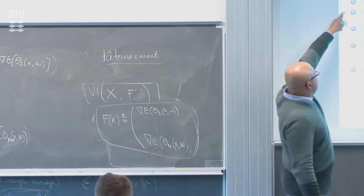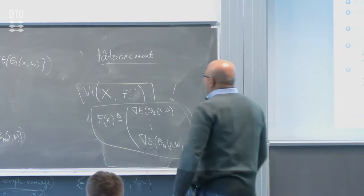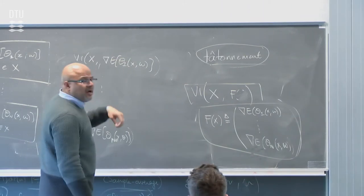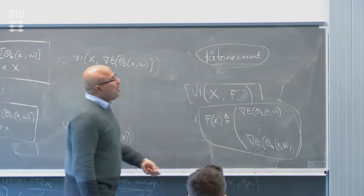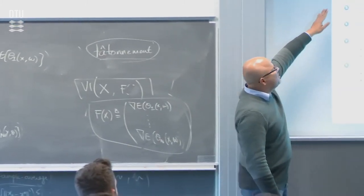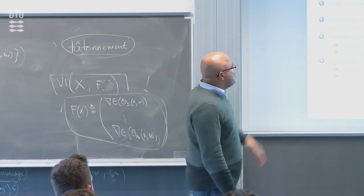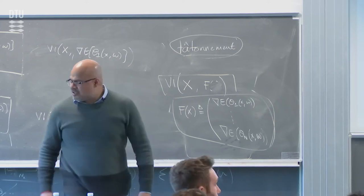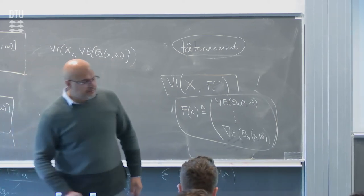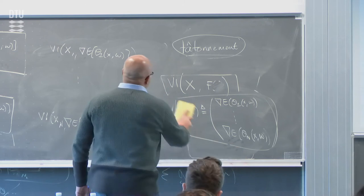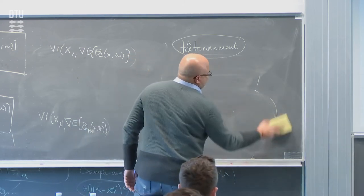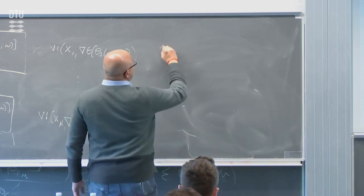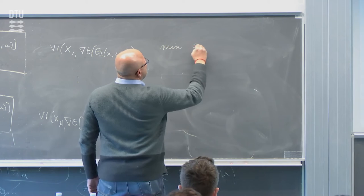If you want to solve it using the decentralized approach, each agent has to figure out how to solve this problem at any given point in time. That's where you need to use standard stochastic approximation and stochastic optimization schemes. Not all of you are going to develop algorithms, but it's useful to know how to solve them.